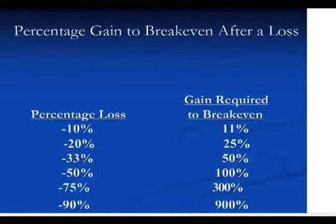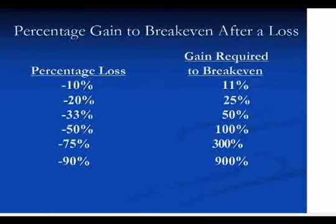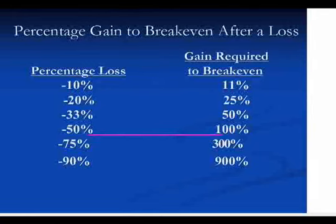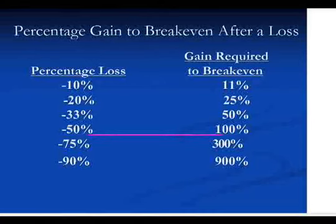You've probably seen this chart — percentage gain to break even after a loss. This shows you why it's so critical to keep your losses down, because just based on the power of compounding, if you take a 50% loss — say you take a $100,000 trading account down to $50,000 — you might say, well, I only lost $50,000, I can make that back. But now you've got a lower base of $50,000, so that's actually requiring a 100% gain to get back to even. From that perspective, that's not very attractive.